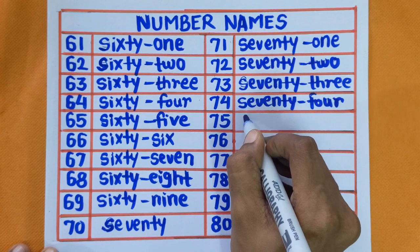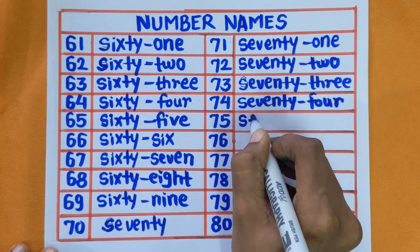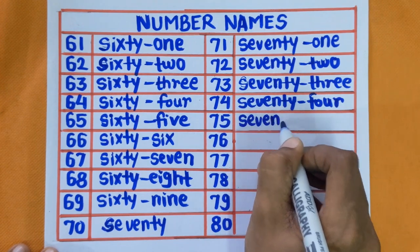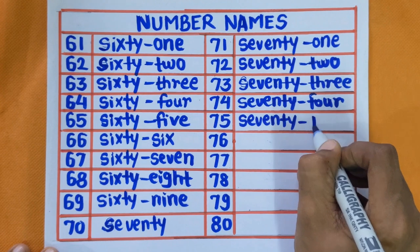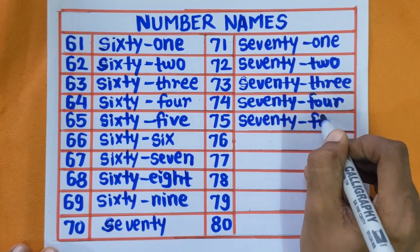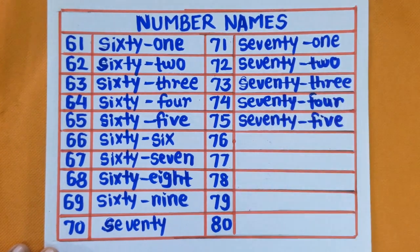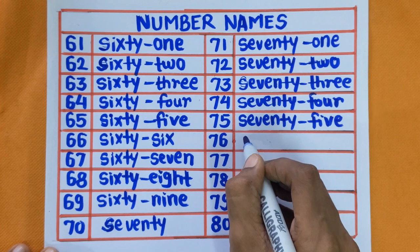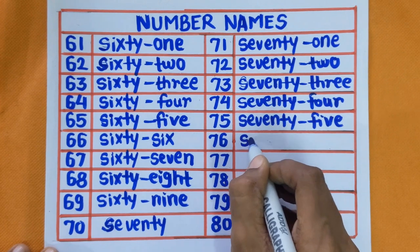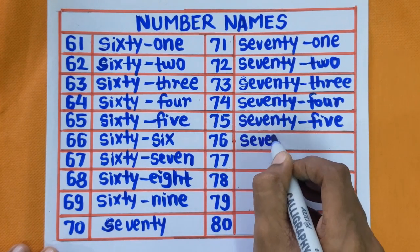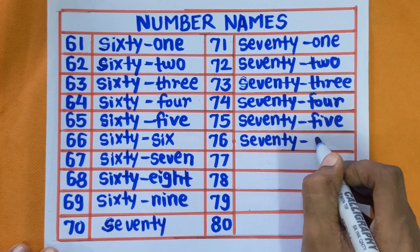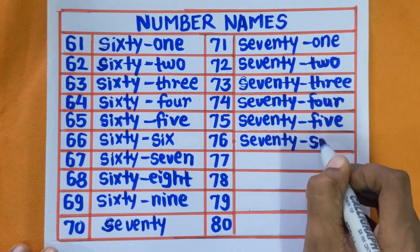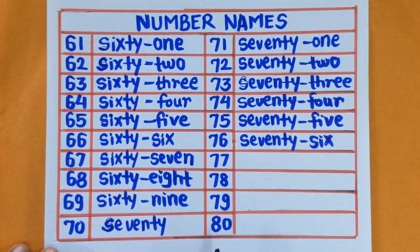Next is 75 — S-E-V-E-N-T-Y-F-I-V-E. 75. Next is 76 — S-E-V-E-N-T-Y-S-I-X. 76.